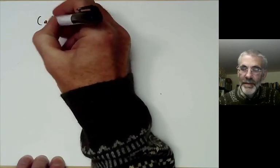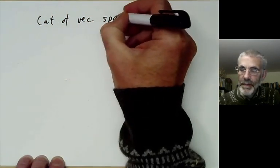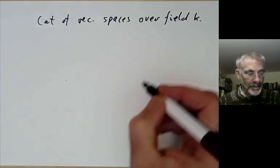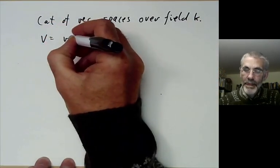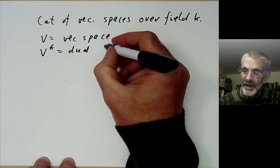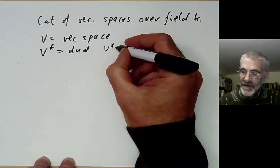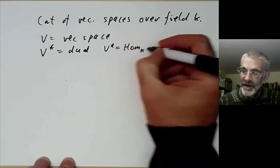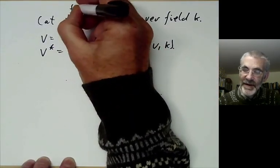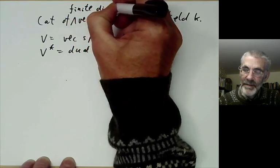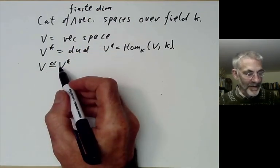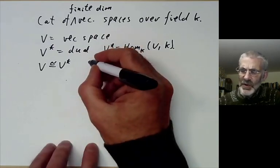We're going to take the category of vector spaces over some field K. If V is a vector space, we can define a dual space V* which is Hom over K from V to K. Let's make these spaces finite dimensional to make things easier. We notice that V is isomorphic to its dual because V is finite dimensional. However, this isomorphism is not really natural.